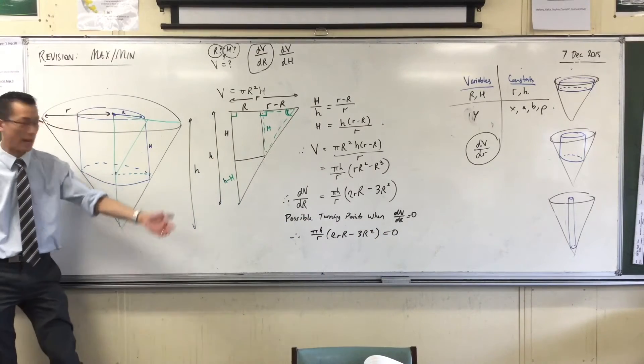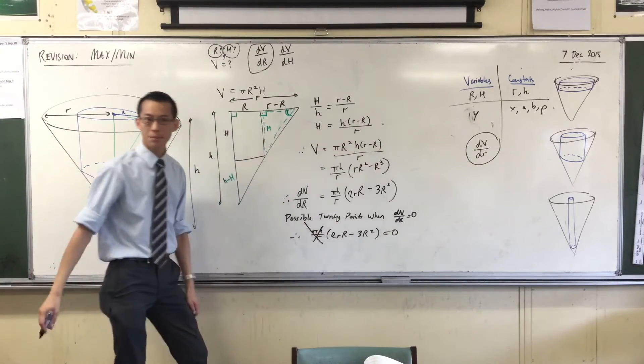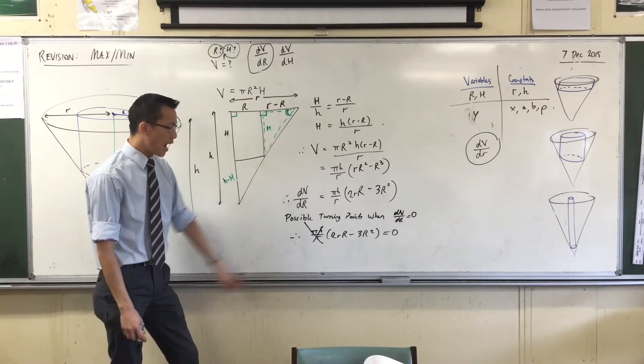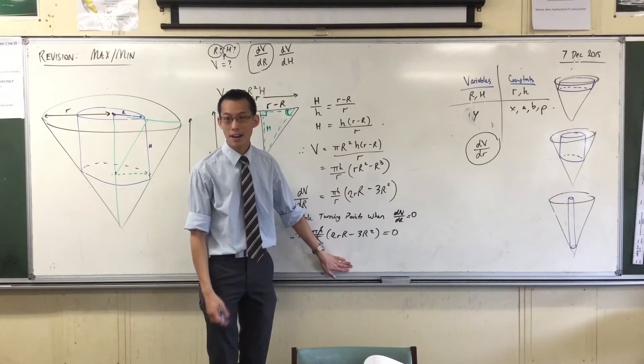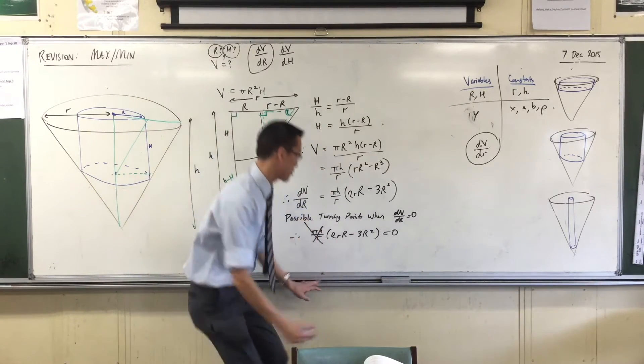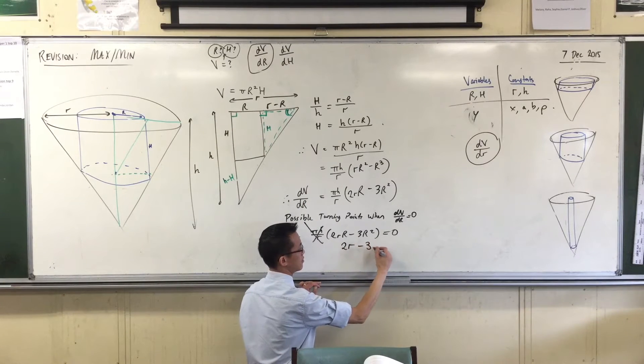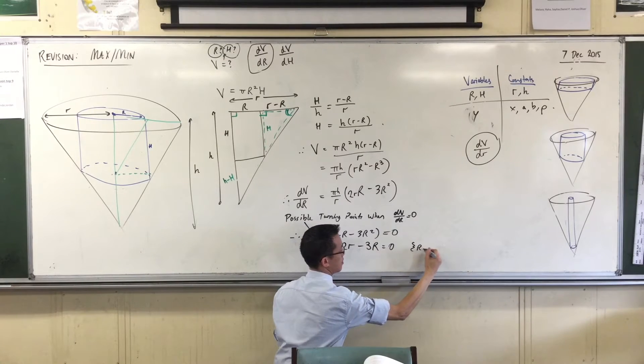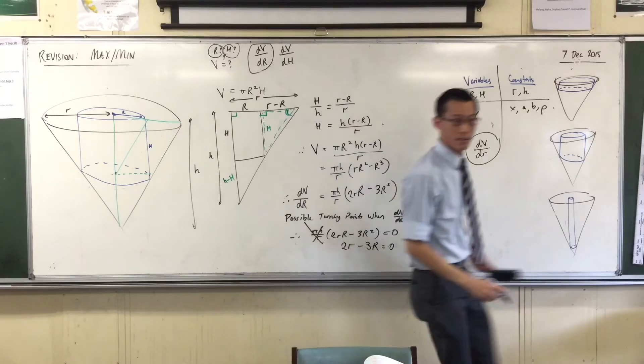Now, you can see the clear advantage of having brought that constant out the front. You can pretty much ignore him. I don't have to, I can divide through by R, capital R, because r is not zero, right? Because it's an actual length. Does that look good so far? Checking out.